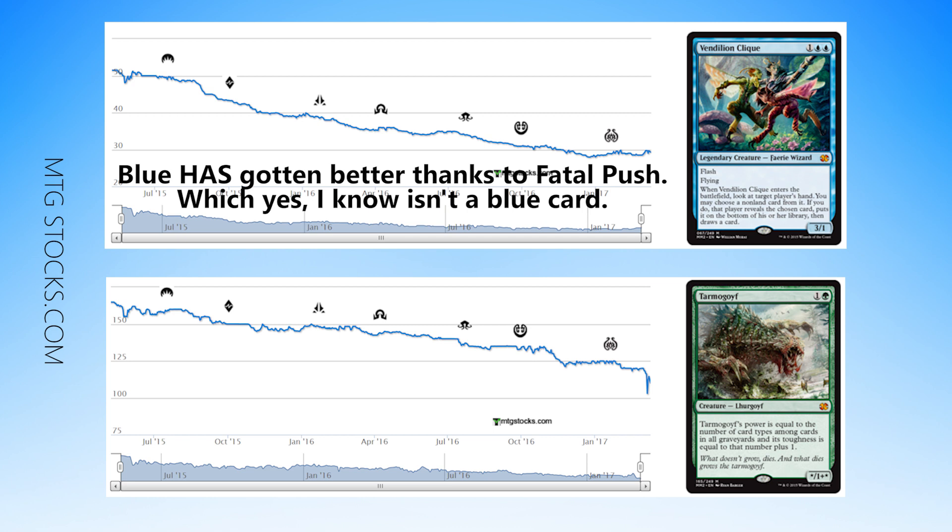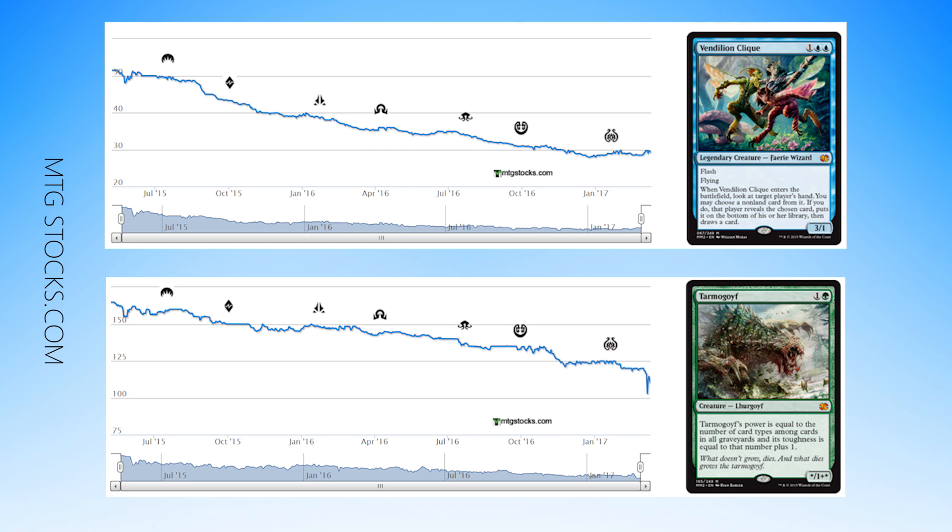And the other thing with Tarmogoyf is that it got reprinted twice, and not only did that happen, but we had Dredge really shaking up the format. So, people had way more graveyard hate than they did in the past, and that made Tarmogoyf weaker, and that caused the price to not necessarily rebound so easily. So, we have these two cards that people were excited for the reprints, and those reprints really drove down the prices for various reasons. But they're not like the Zendikar fetches, which are way different.